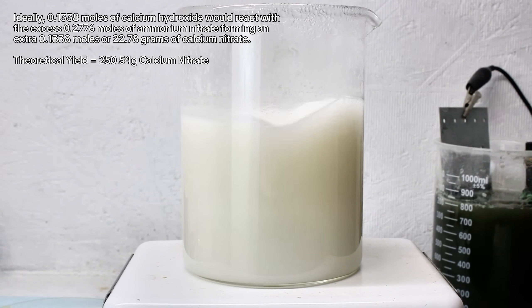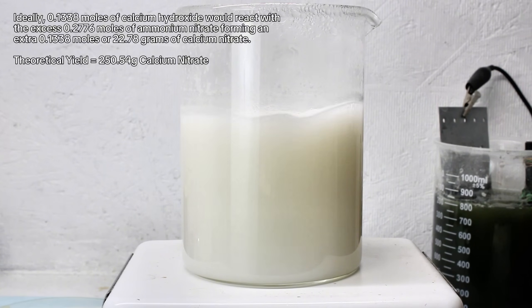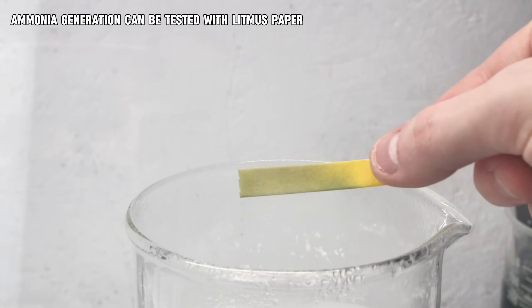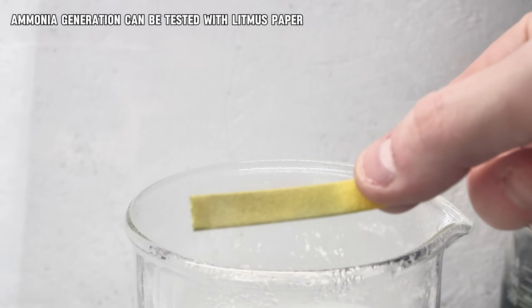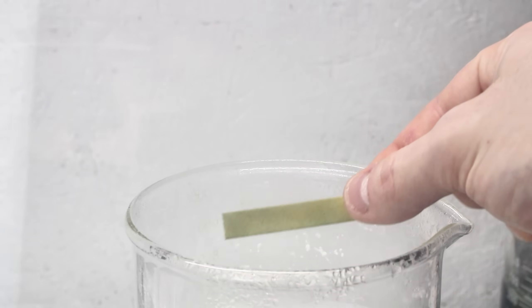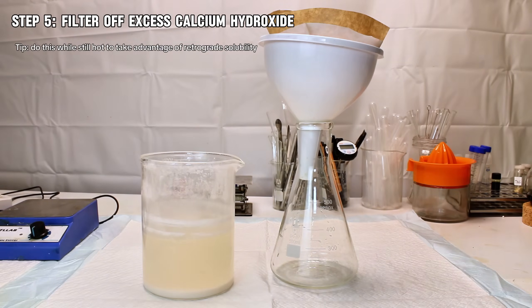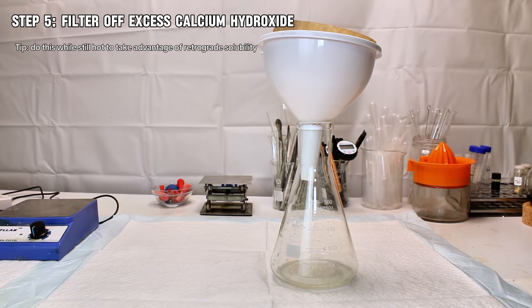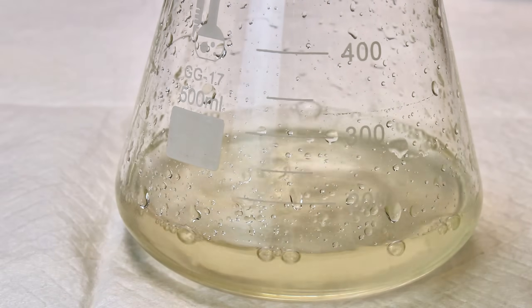I kept boiling the mixture until no more ammonia gas was being generated, which can be tracked by holding litmus paper above the reaction mixture. Ammonia is extremely alkaline and will turn litmus paper blue. Once no more ammonia was being produced, I removed all the excess calcium hydroxide by passing the mixture through a coffee filter.